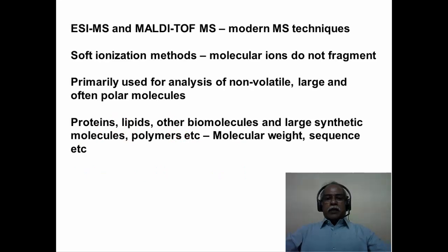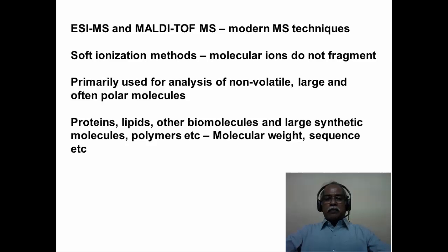Electrospray ionization and MALDI mass spectrometry are modern mass spectrometry techniques, also known as soft ionization methodologies. Because of the soft ionization technique, the molecular ions do not possess as much energy as in electron impact ionization mass spectrometry, so molecular ions do not fragment under this ionization condition. These techniques are primarily used for the analysis of non-volatile, large, and often polar molecules. Typical examples are proteins, lipids, and other biomolecules like DNA.